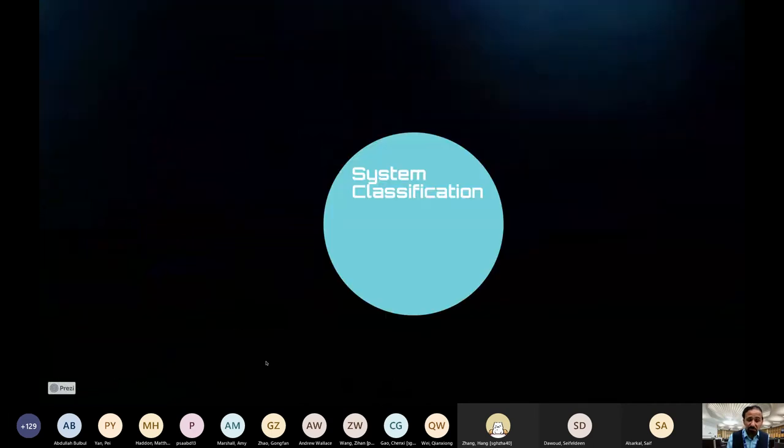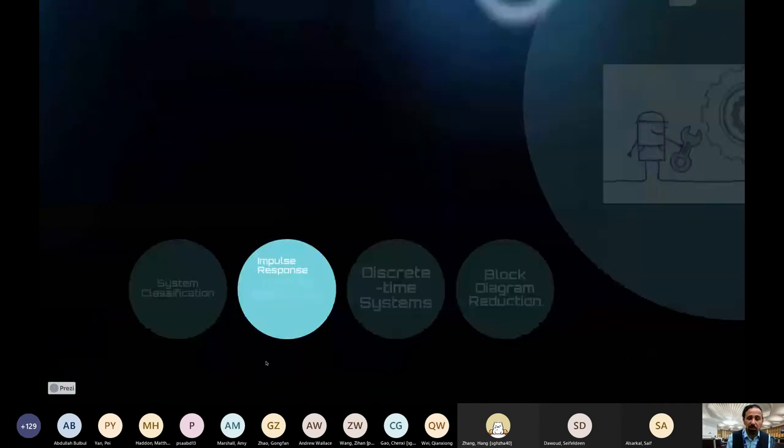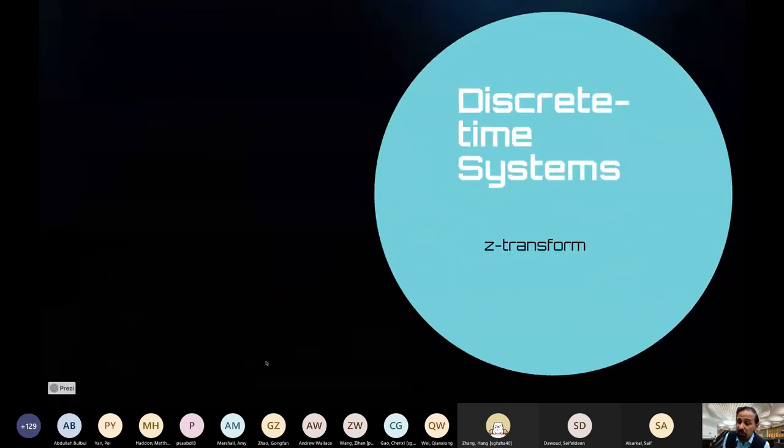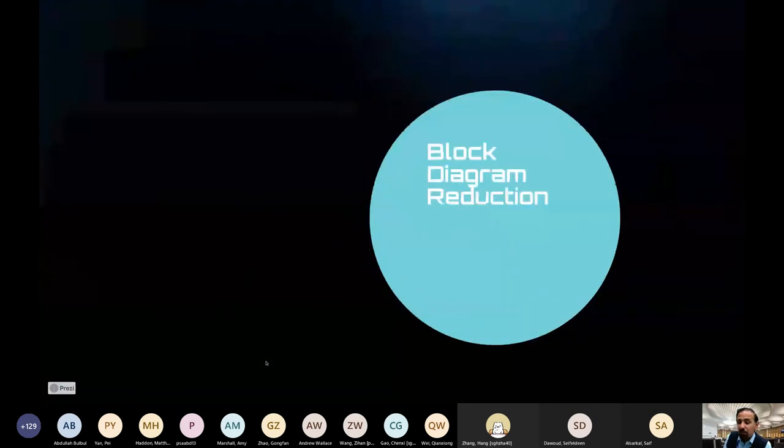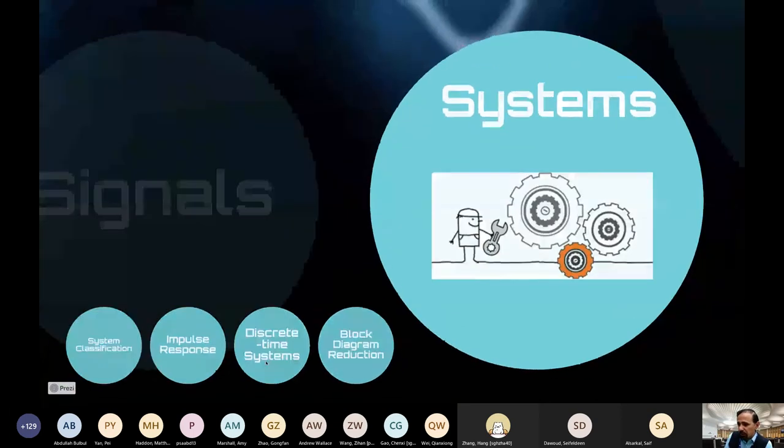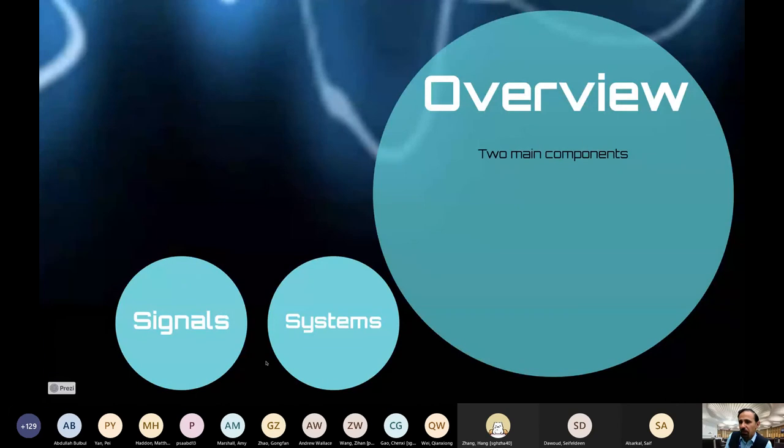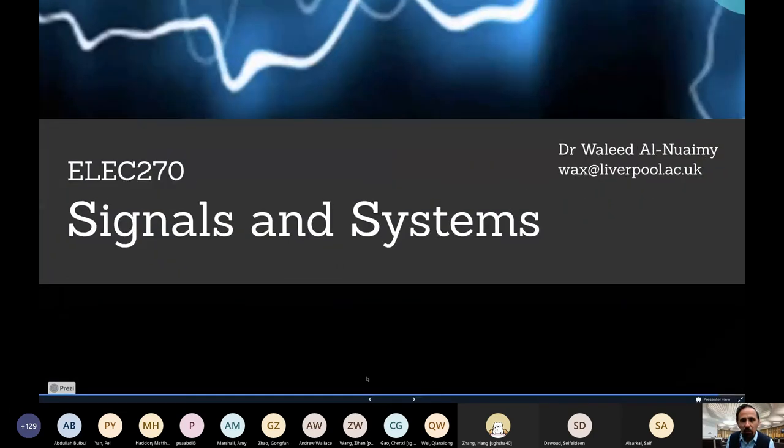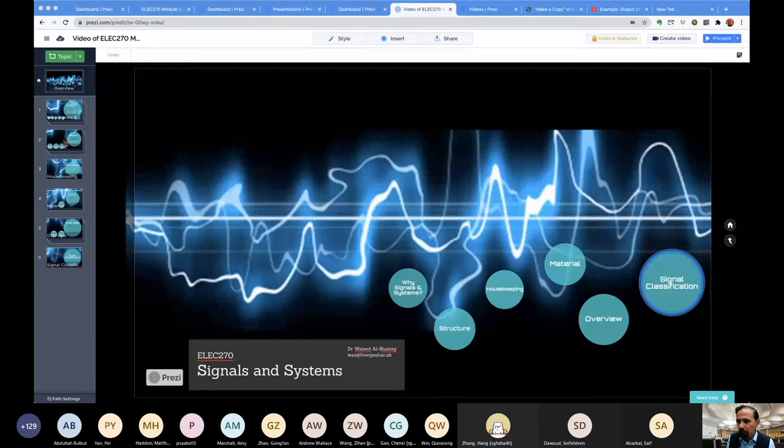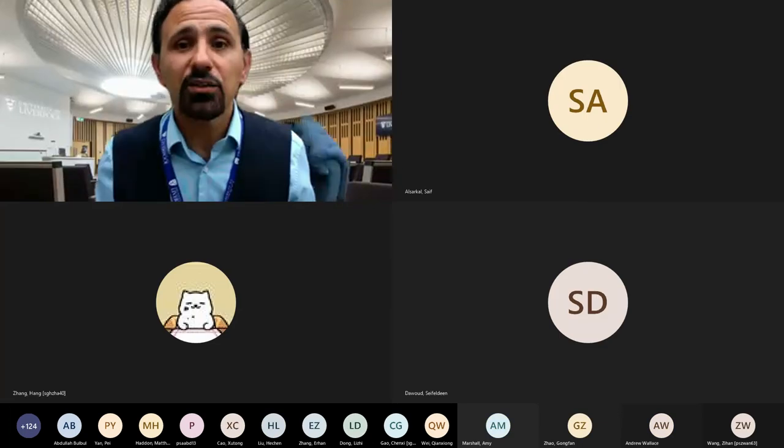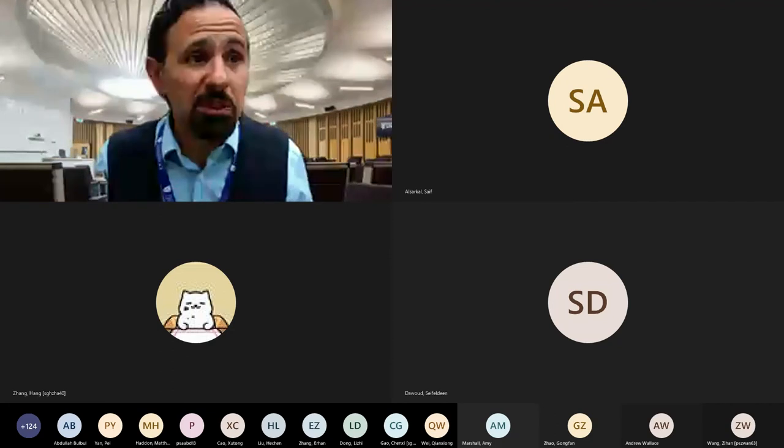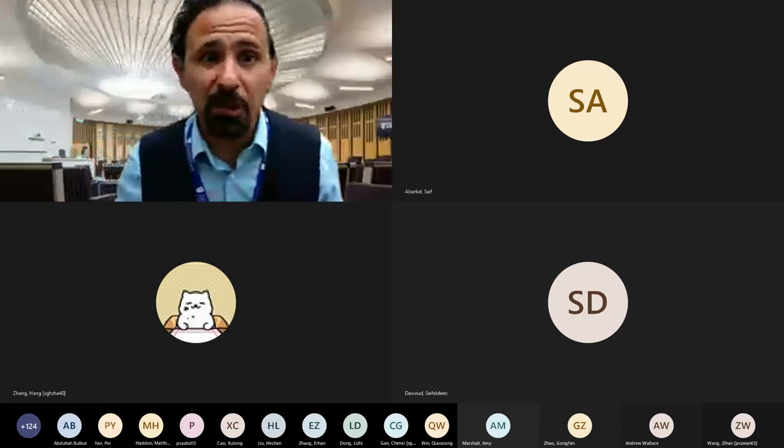Then we go to speak about systems for four or five weeks. Start with system classification. Then we speak about impulse response, Laplace transform, then discrete time systems. We introduce something called the Z transform. Then we speak about block diagram reduction very briefly at the end. In a nutshell, that is the module.